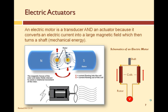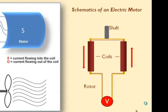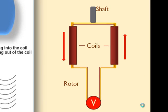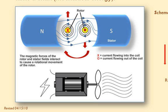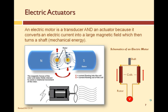Electric actuators use electricity or electrical energy to create motion. An electric motor is a type of electric actuator. Most direct current motors, or DC motors, operate by current flowing through a coil of wire called the rotor, creating a magnetic field around the coil. The coil is wrapped around the motor shaft and positioned between the poles of a large permanent magnet or electromagnet. The interaction of the two magnetic fields causes the rotor, the coil, to rotate on its axis, rotating the motor shaft. Reversing the direction of the current flowing through the rotor causes the rotor to rotate in the opposite direction. Thus, an electric motor is a transducer and an actuator because it converts electrical energy to magnetic energy to mechanical energy or motion.